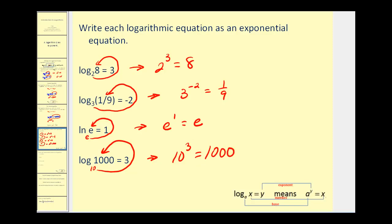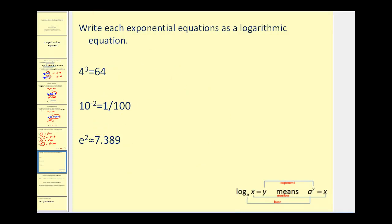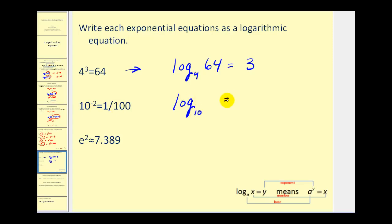Now let's write these exponential equations as logarithmic equations. On the first problem, we know we're going to have a logarithm with three key components: the base, the exponent, and the number. The base is 4, a logarithm is an exponent so the log equals 3, and the number is 64. Four to the power of 3 equals 64, and it checks. On the next one, it's base 10, the exponent is negative 2 so the log equals negative 2, and the number is one hundredth. Since it's a common log, we leave the base off.